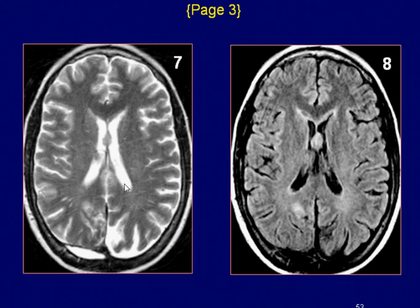Axial T2-weighted image of the brain in the same patient shows a hypo-intense lesion on both sides of the septum pellucidum within the lateral ventricles. A hyper-intense lesion is also seen in the right parietal-occipital region of the brain. Axial FLAIR image demonstrates the same lesions as hyper-intense nodular masses.